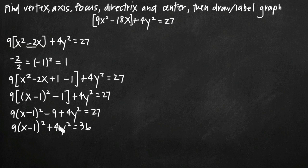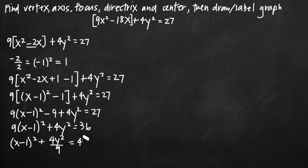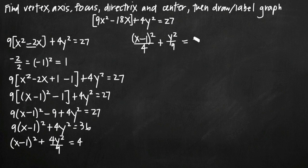Now we have perfect squares for both x and y. We want to remove the constant coefficients on the x and y terms. Dividing through by 9 gives x minus 1 squared plus 4y squared over 9 equals 4. Then dividing both sides by 4 gives x minus 1 squared over 4 plus y squared over 9 equals 1. Now that we have our equation in standard form, we can see it is the equation of an ellipse — it equals 1, has a plus sign between terms, and has perfect squares in the numerators with constant squares in the denominators.